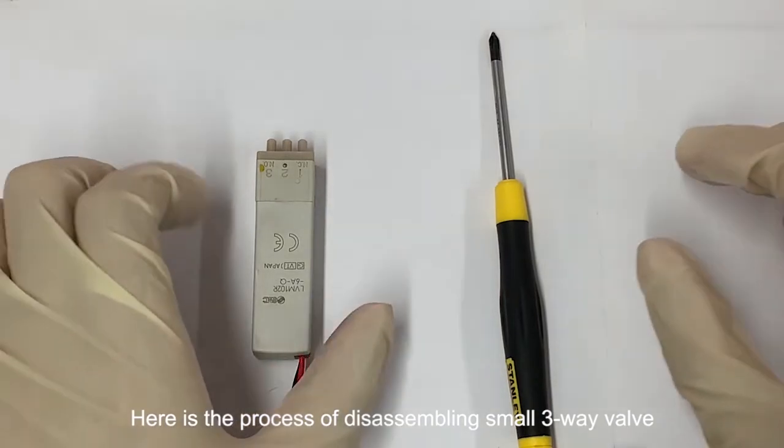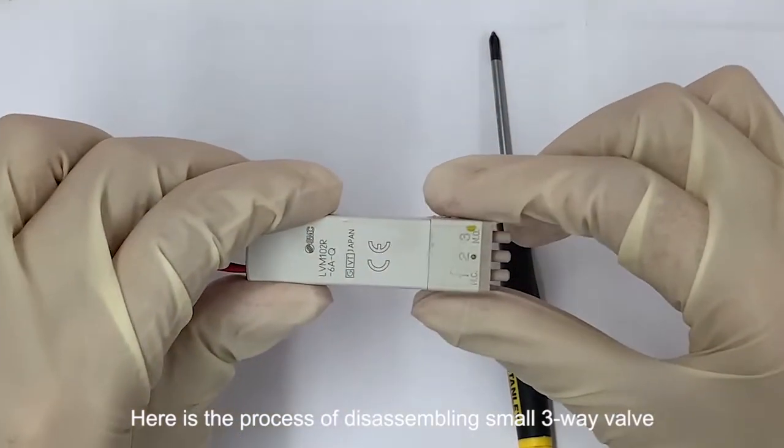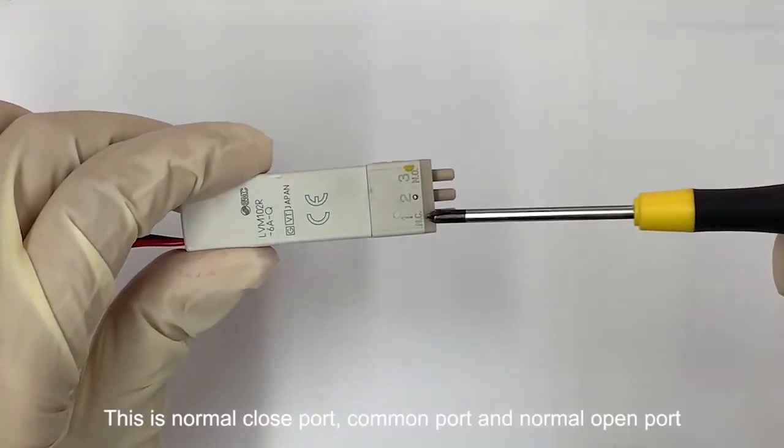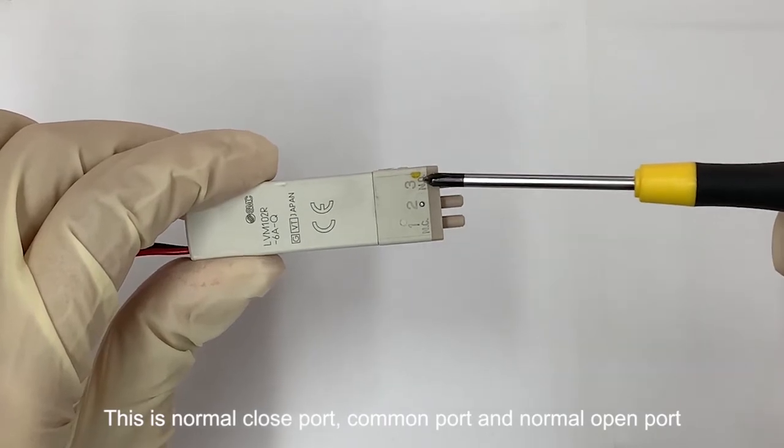Here is the process of disassembling a small three-way valve. This is normal close port, common port, and normal open port.